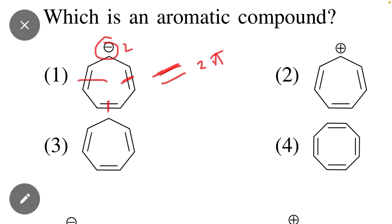The negative charge is also equal to two pi electrons. There are total eight pi electrons. If there are total eight pi electrons, then that compound will be anti-aromatic. But if pi electrons equal six, then that compound will be aromatic.